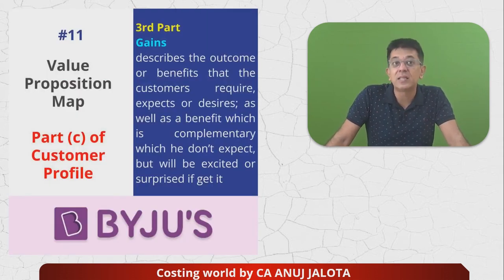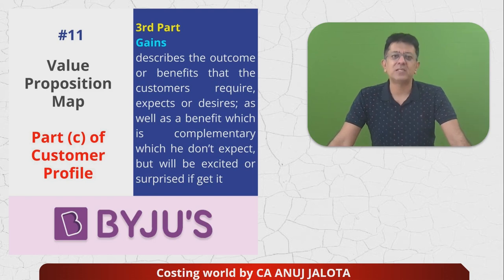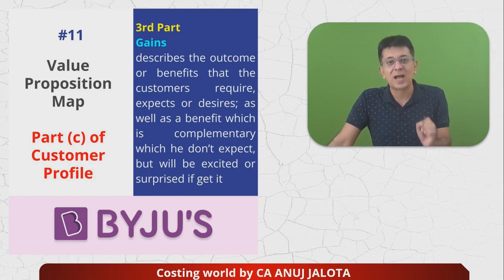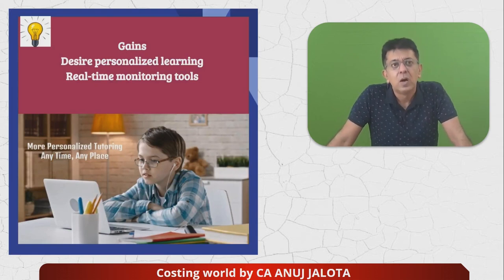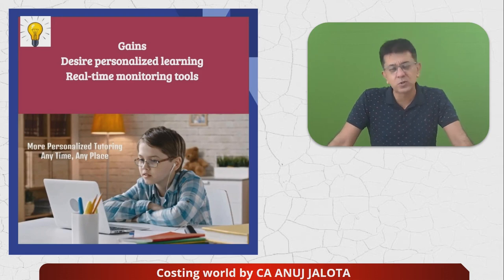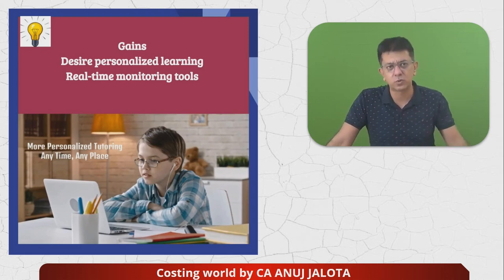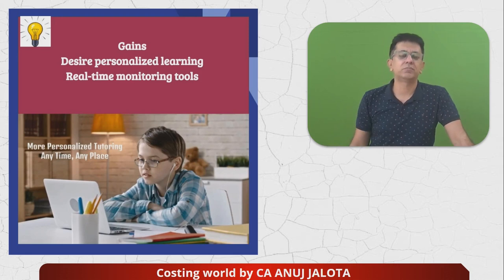Third — gains. Gains are the outcome or the benefits that the customer expects or requires, as well as complementary benefits that the customer does not expect but will be excited or surprised to receive. So what gains does a Byju's consumer want? They want personalized learning — that is one thing. Second, real-time monitoring tools to know whether they have understood the content or not. Every now and then, Byju's gives a pop-up of questions for you to answer. These are the gains that a consumer wants, and this is the right-hand side of the entire value proposition map.